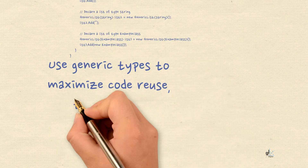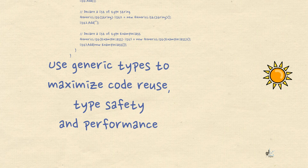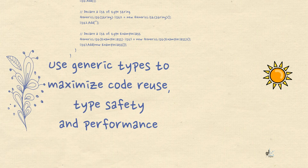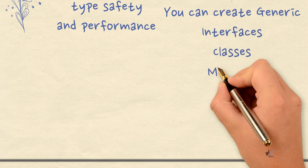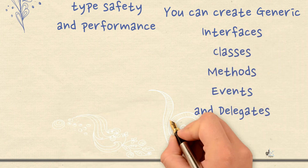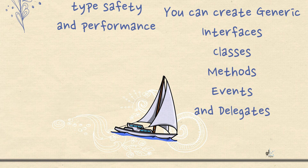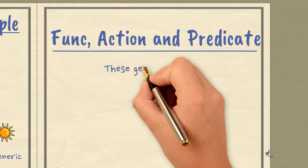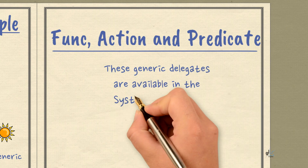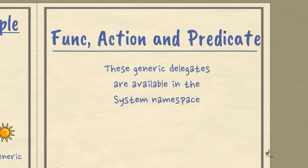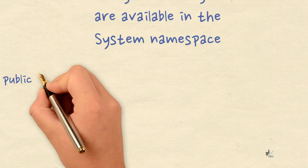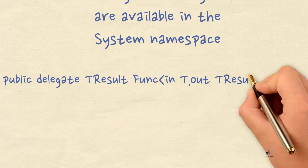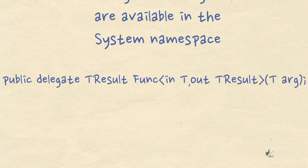Use generic types to maximize code reuse, type safety, and performance. A developer can create generic interfaces, classes, methods, events, and delegates. In this video we'll look at three types of generic delegates provided in C#, namely Func, Action, and Predicate. All of these generic delegates are available in the System namespace. Let's look at an overview of each before we look at basic code examples demonstrating their implementation.